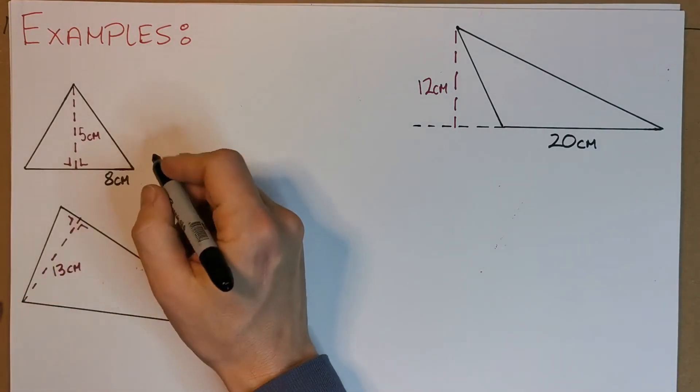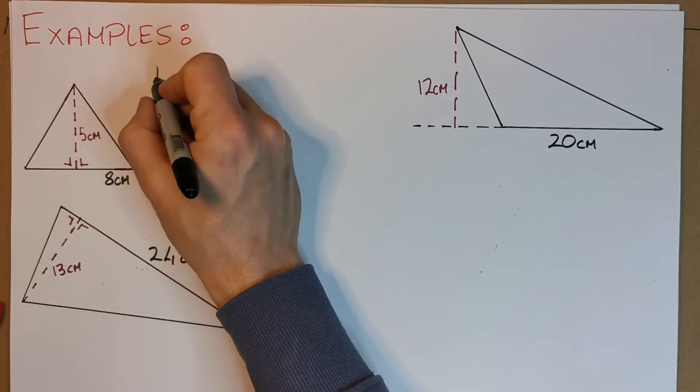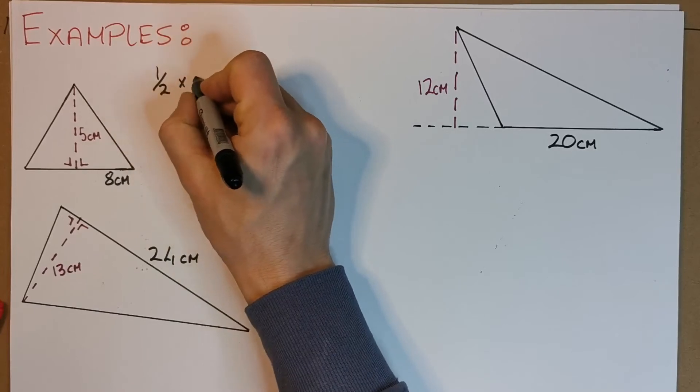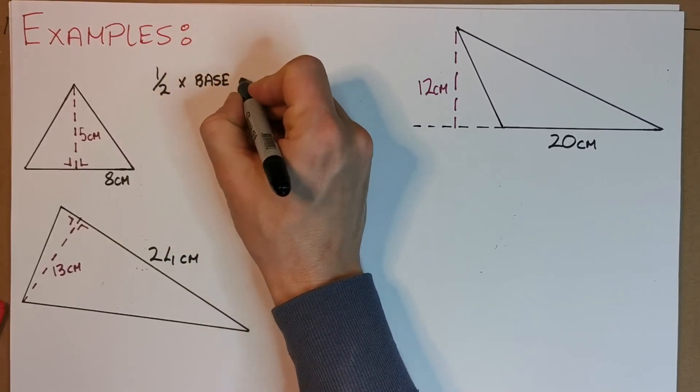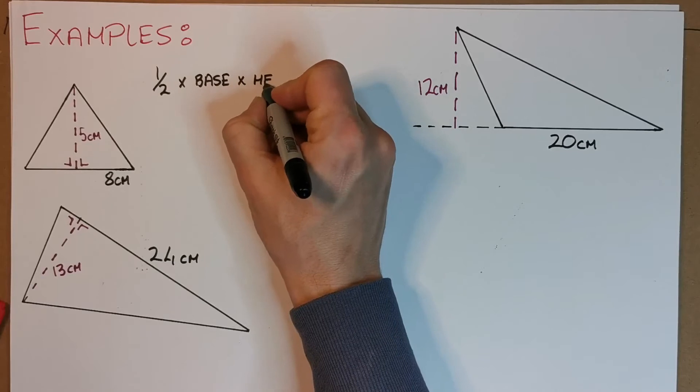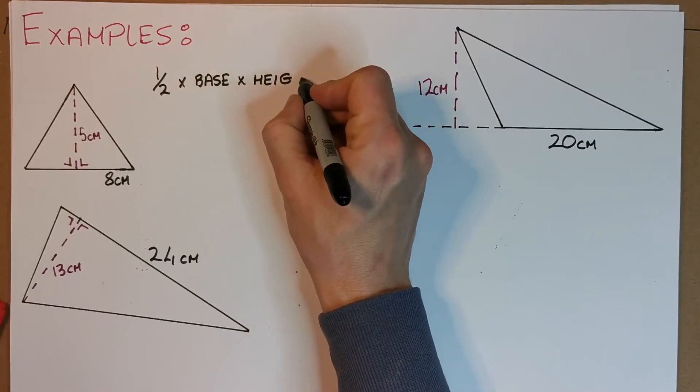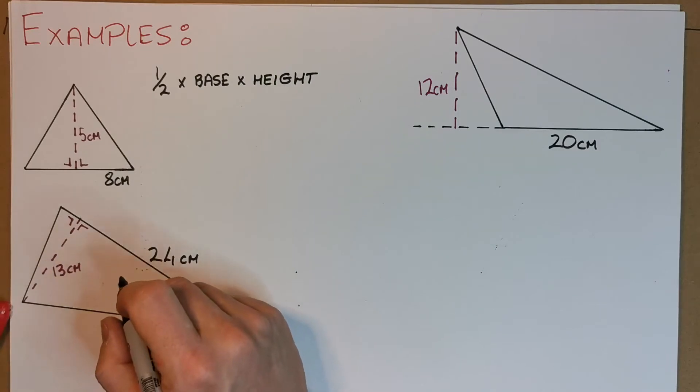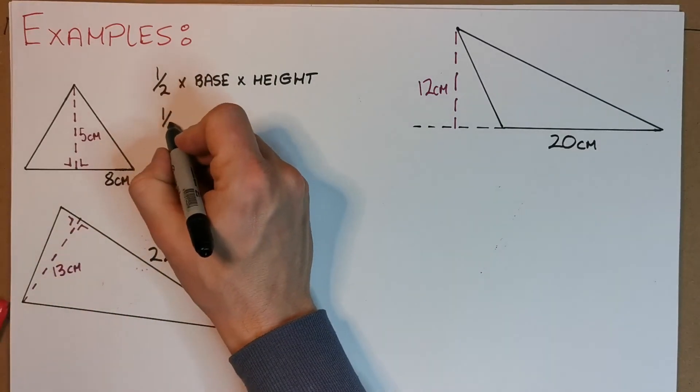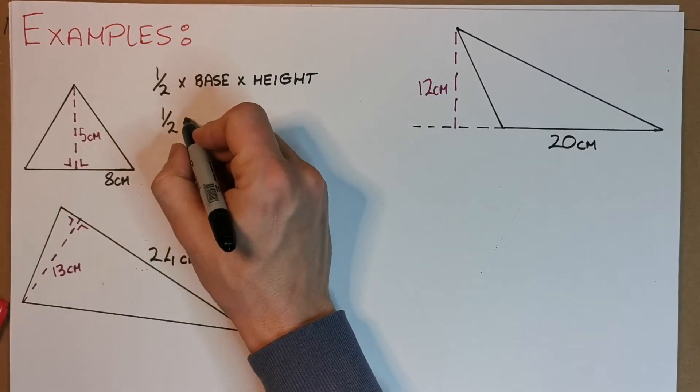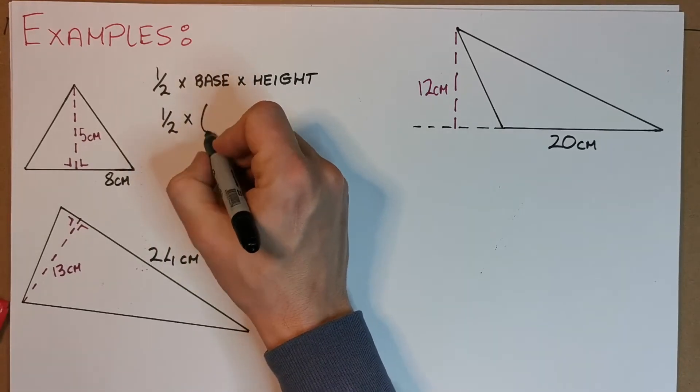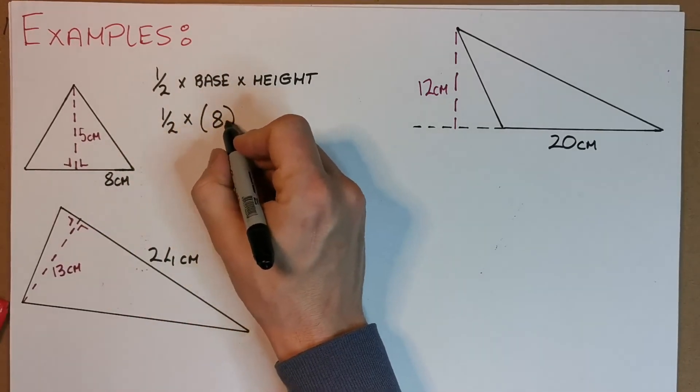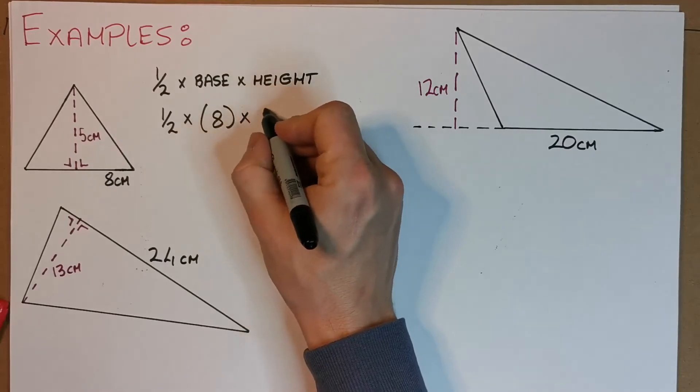What's our formula? It's half times the base and the height—perpendicular height. So we can say that's a half times what's the base, eight, and times the height, five.